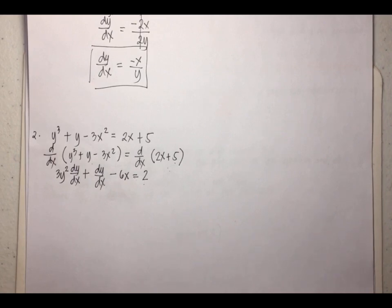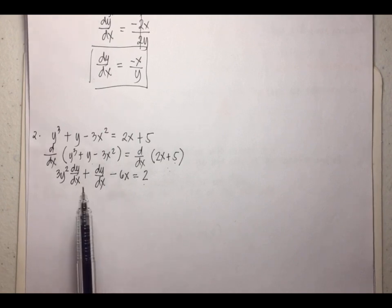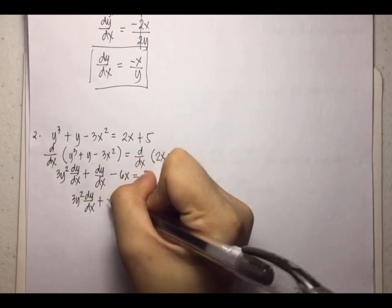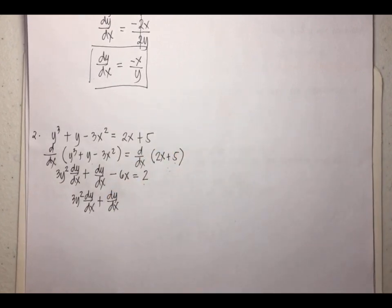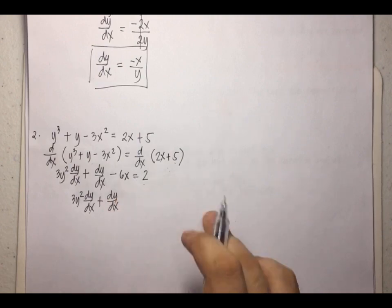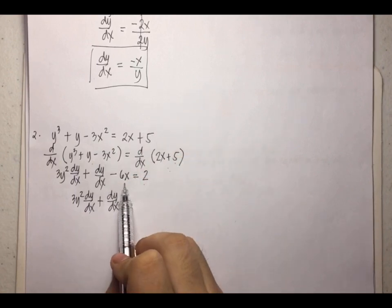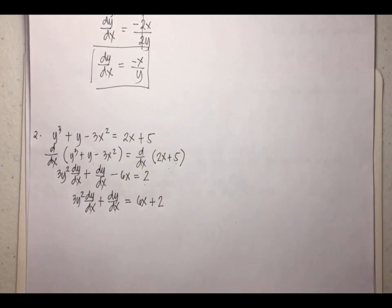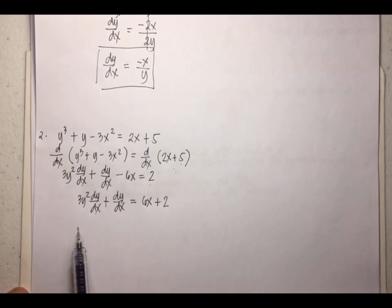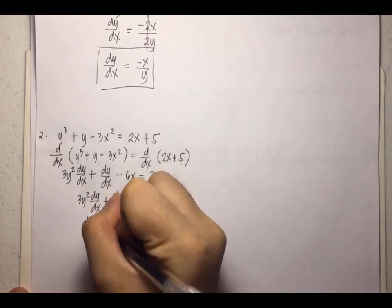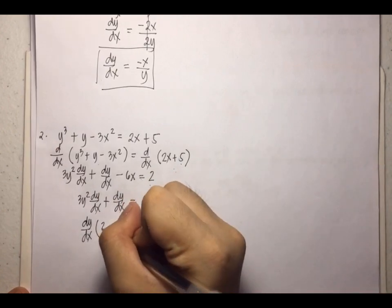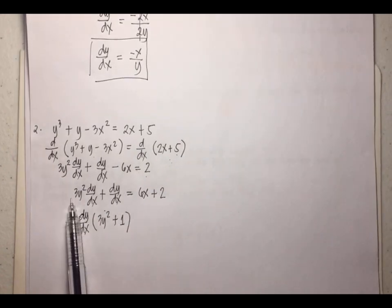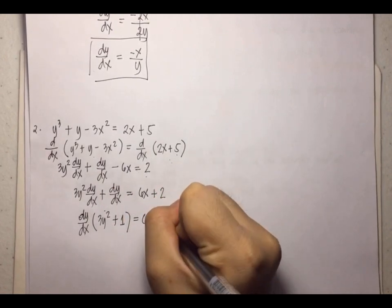Next, keep every term with dy/dx on the left side: 3y² · dy/dx + dy/dx. Move every term without dy/dx to the right side — move -6x to the right, making it +6x, and copy +2. On the left side, dy/dx is a common factor, so we factor it out, leaving dy/dx(3y² + 1) = 6x + 2.